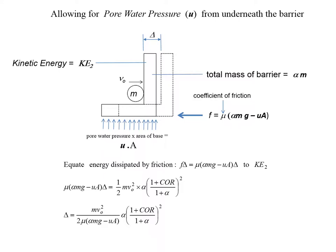This slide presents calculations which take into account pore water pressures, which are compromising the friction on the underside of the barrier. If the barrier is on dry ground, then this adjustment would not need to be applied.